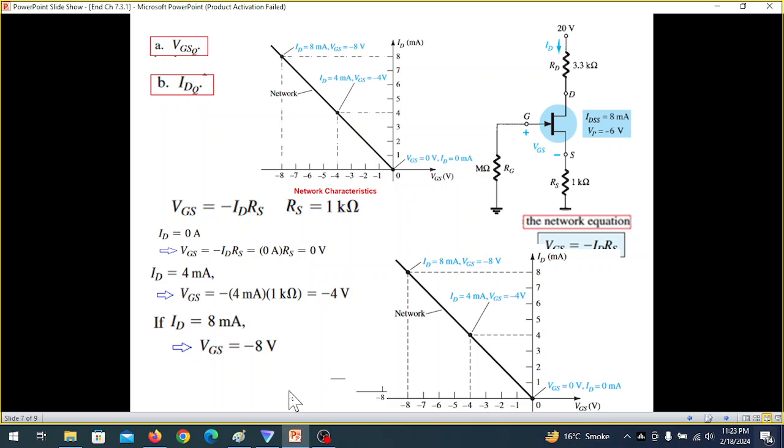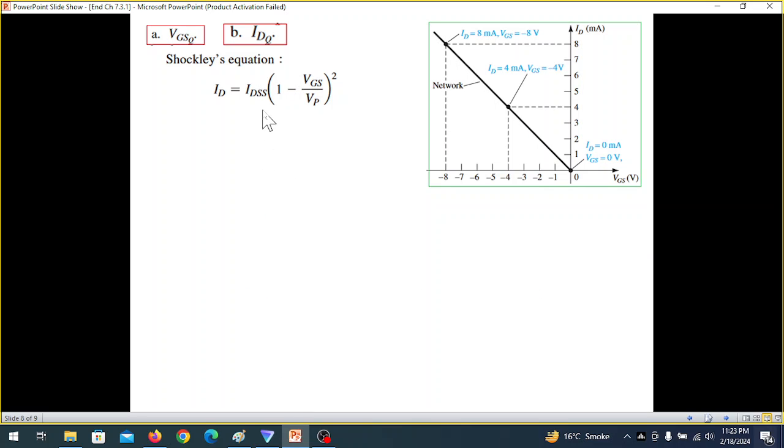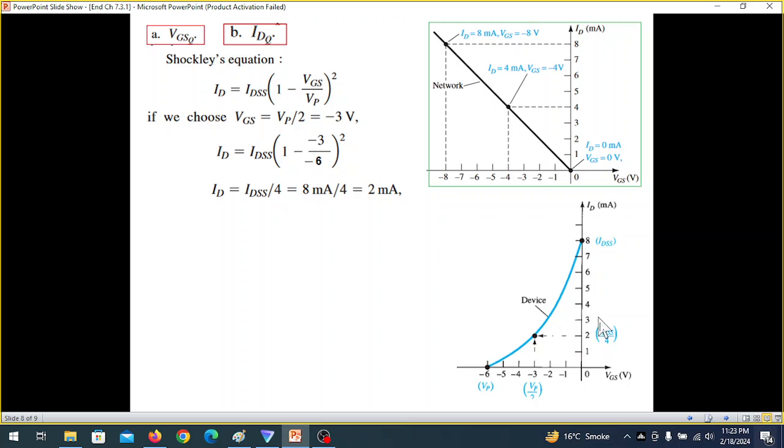We found the network graph. Now we need to find the device graph or device curve from the Shockley equation. We have already done in the previous two videos that we have solved. Basically, we take couple of values of VGS and then we plot. So like, let me show here. If you take VGS is equal to 0 and put 0, then you can get ID is equal to ISS, which is 8 in this case, the question given.